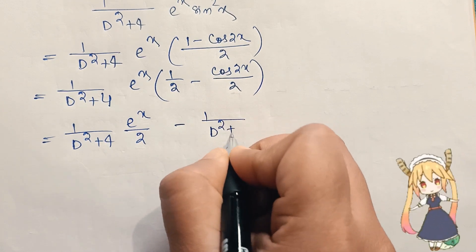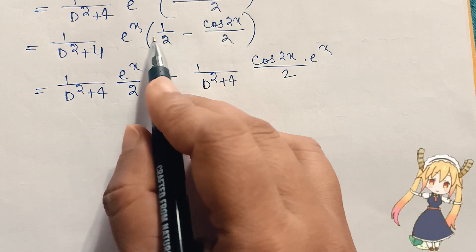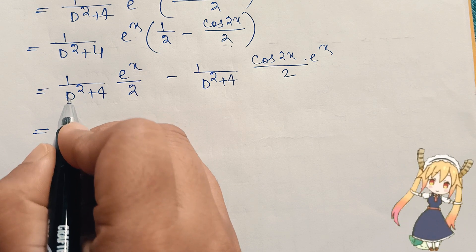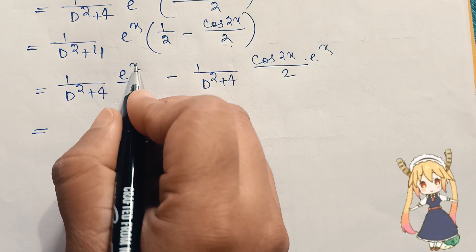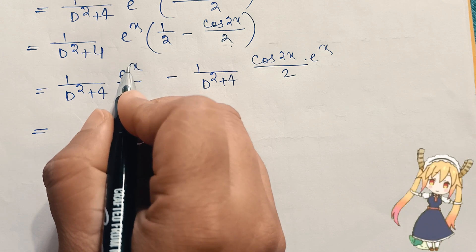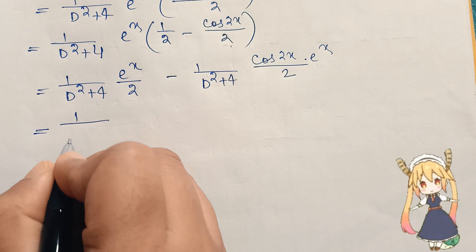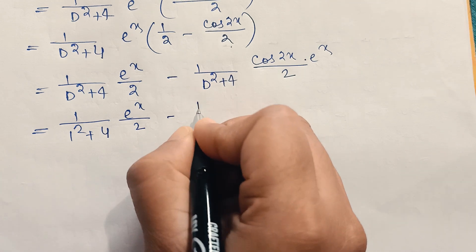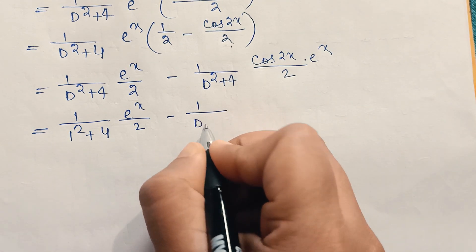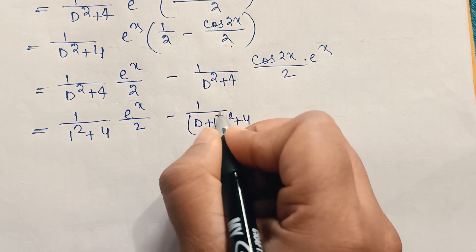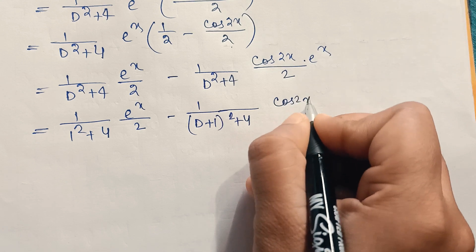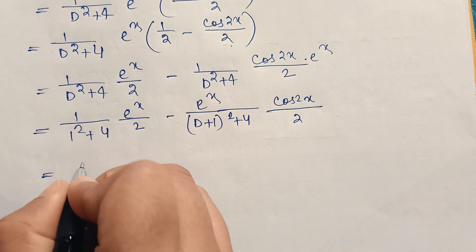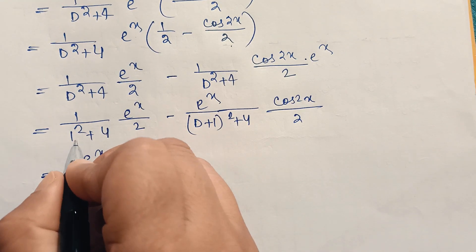We separate the two terms. For the first term, since we have eˣ, we replace D with (D+1) using the exponential shift formula. So the first term gives 1/(1² + 4) · eˣ/2 = eˣ/10, and the second term becomes 1/((D+1)² + 4) · eˣcos2x/2.